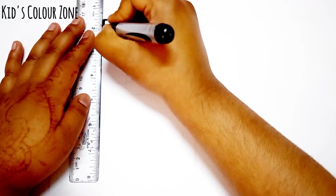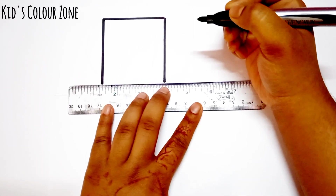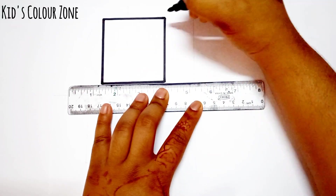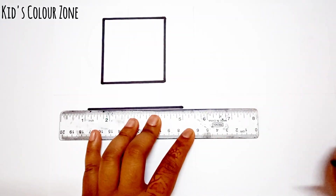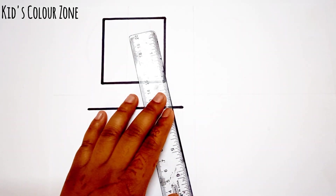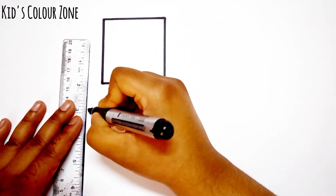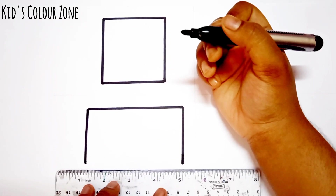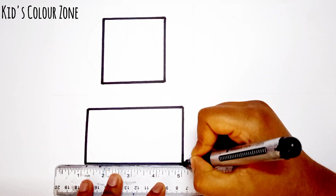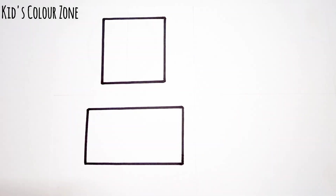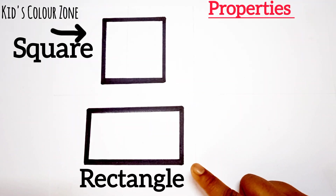Now, I'm drawing a square. This is a rectangle. This is a square.